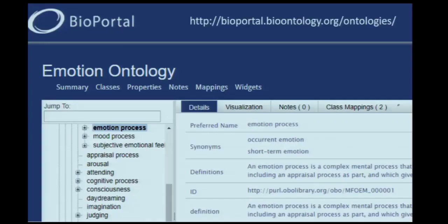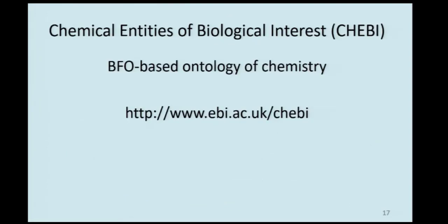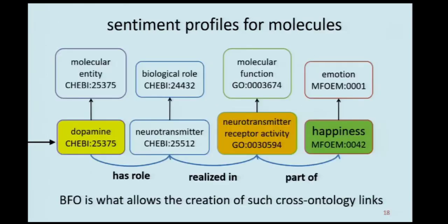The emotional ontology can be found in various places. It was built largely by Jana Hastings, who was originally one of the principal developers of the Chemical Entities of Biological Interest ontology — a chemistry ontology. The connection is clear: certain emotions go hand in hand with certain chemical phenomena. Happiness, for instance, is connected with neurotransmitter receptor activity, which is realized by neurotransmitters, one example of which is dopamine.